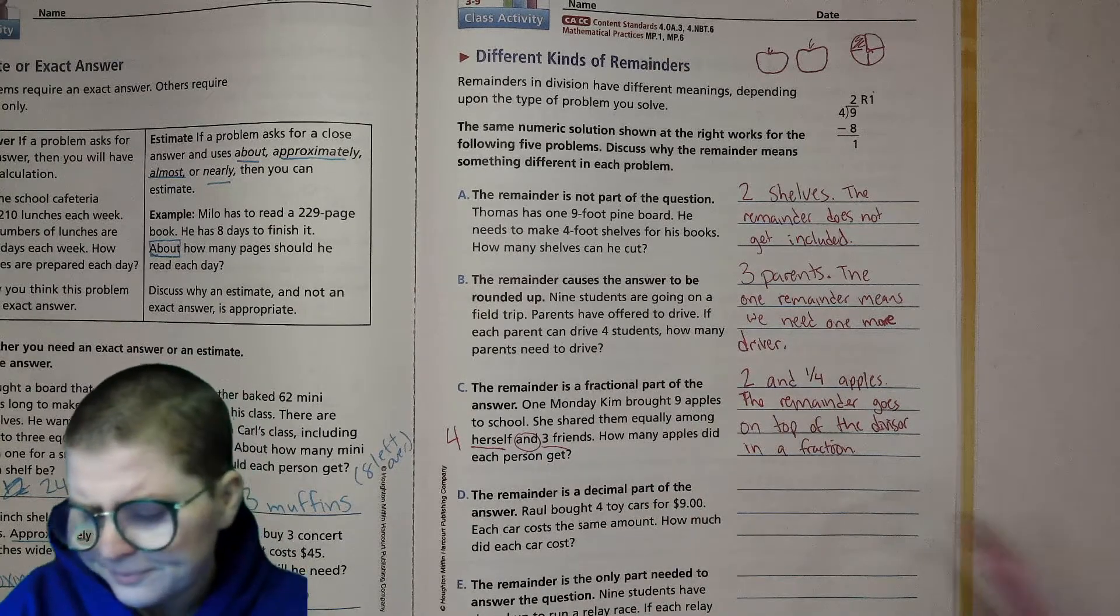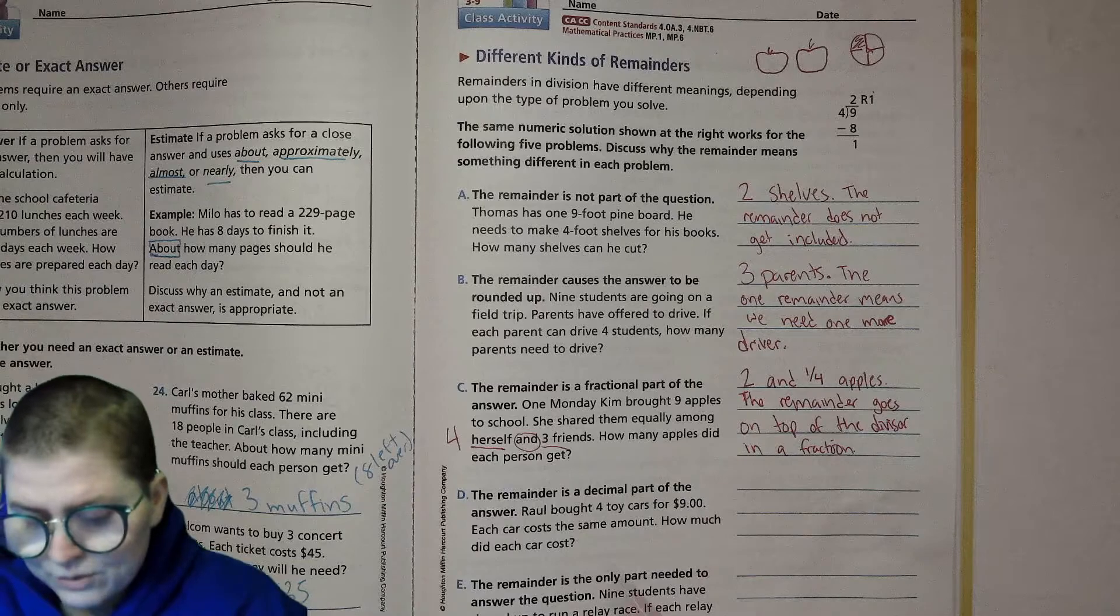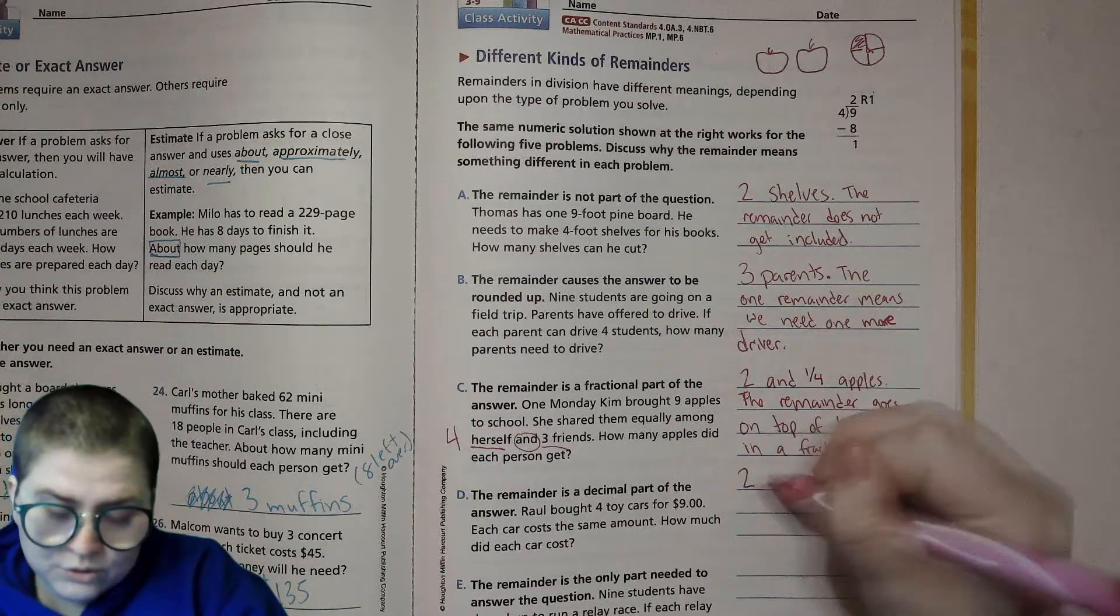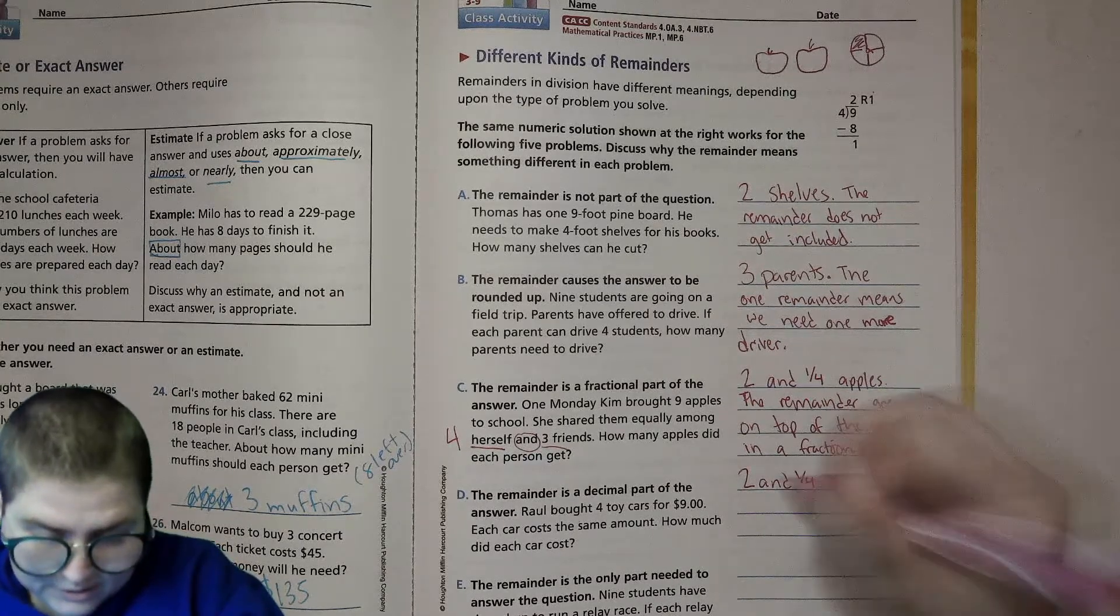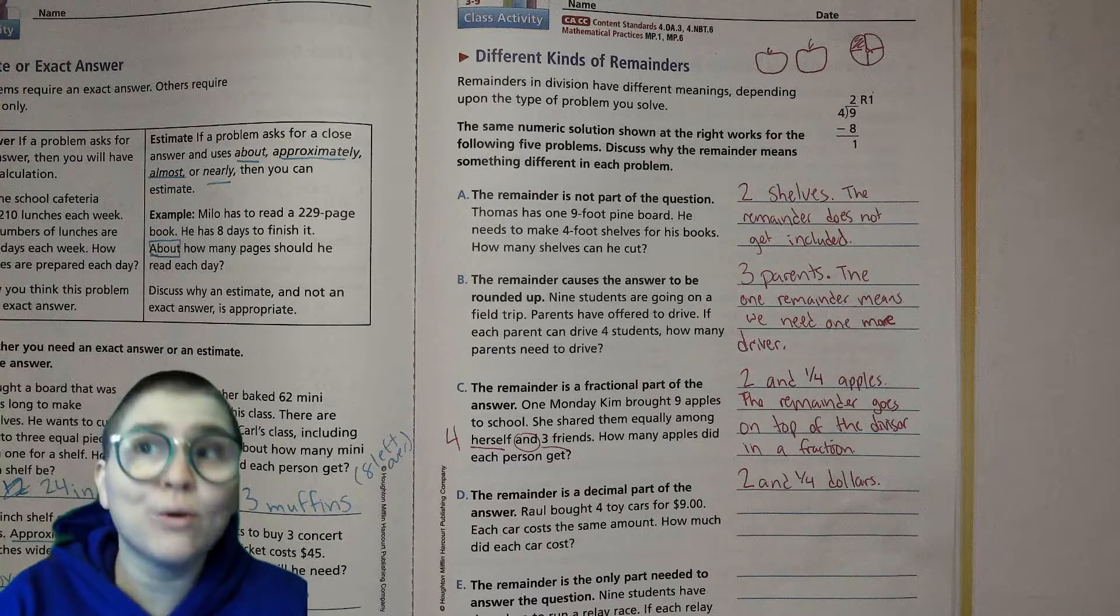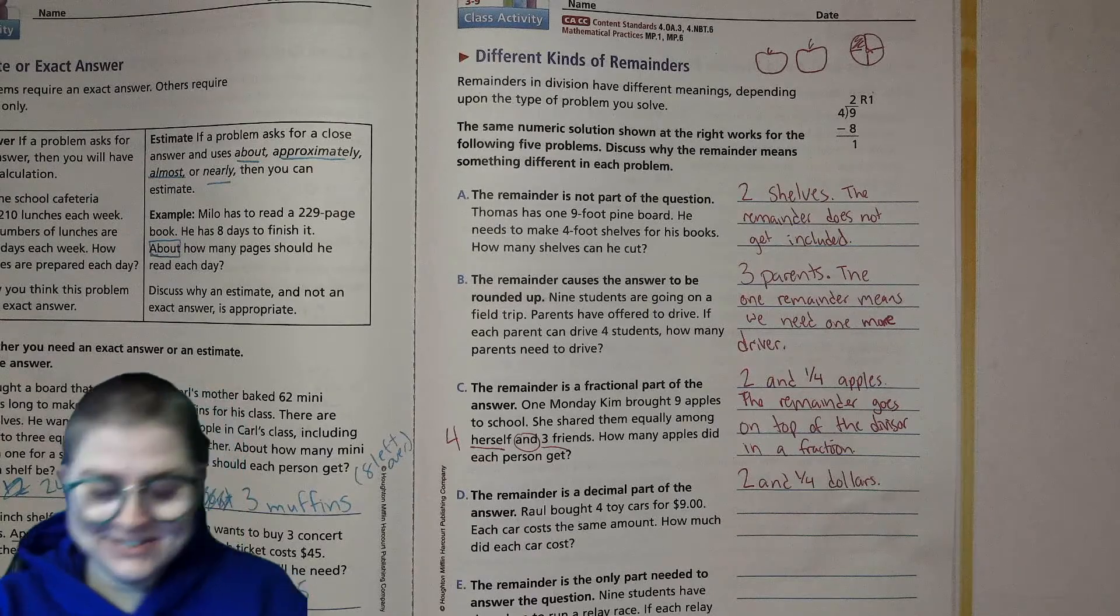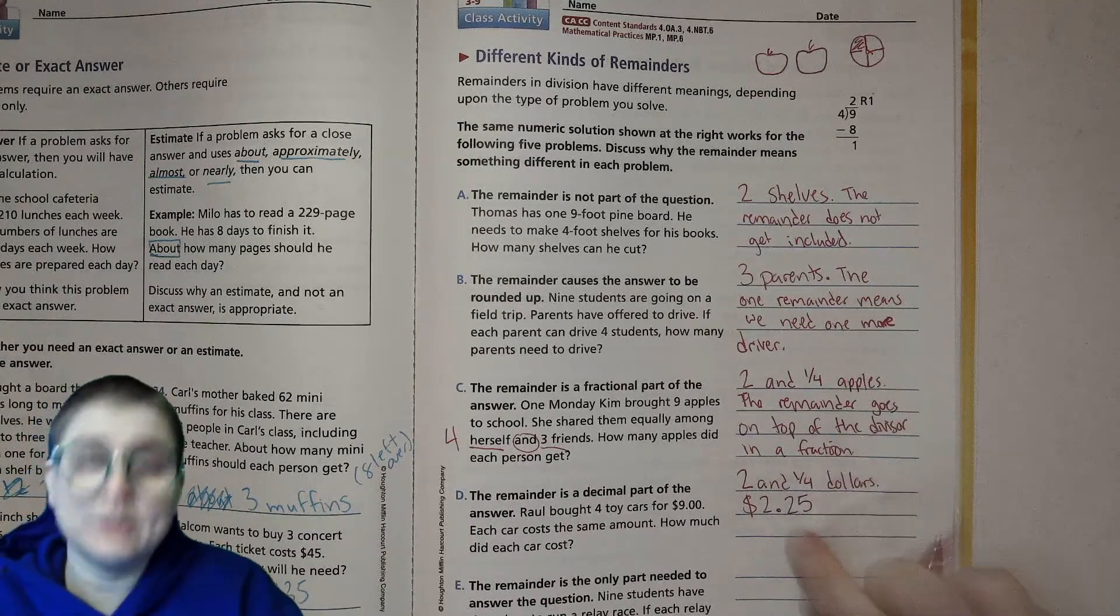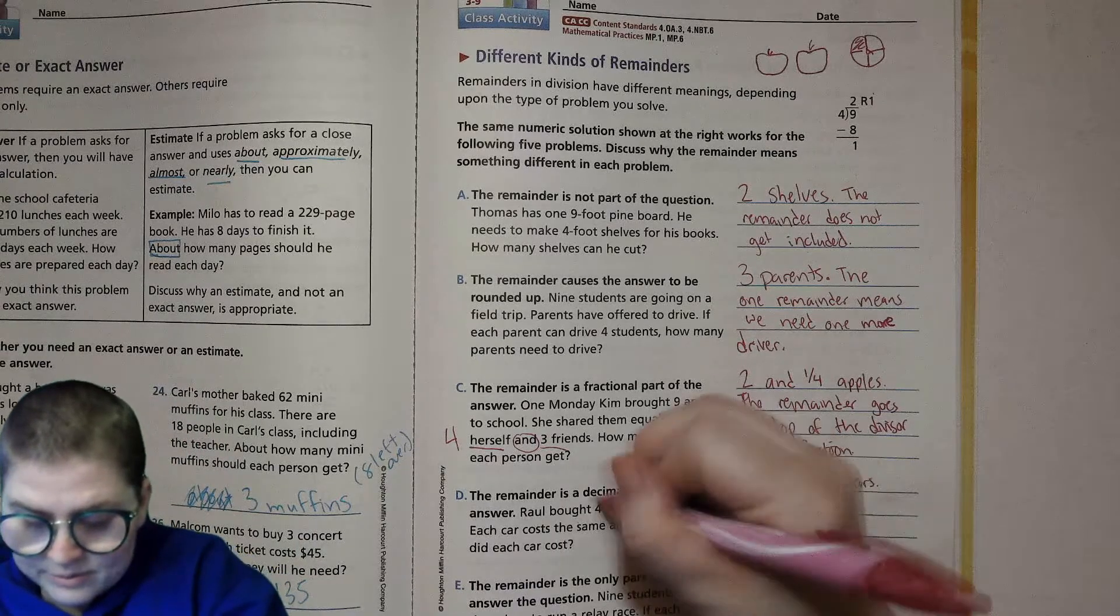The remainder is a decimal part of the answer. This is similar using money. Raul bought four toy cars for nine dollars. Each car cost the same amount, how much did each car cost? So that would be two and one-fourth dollars, but usually we don't talk about dollars in one-fourth. What is a quarter of a dollar? It's a quarter, right, so 25 cents. So that would be a dollar sign, a two, a decimal, and then 25 for 25 hundredths of a dollar or a quarter of a dollar, a quarter. So that is turning into a decimal part.